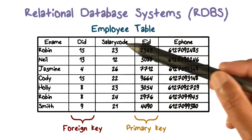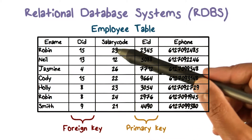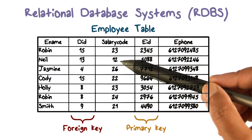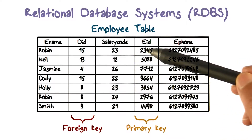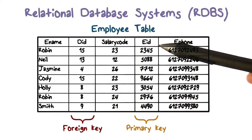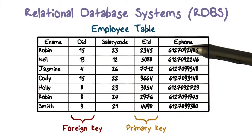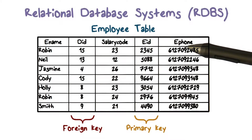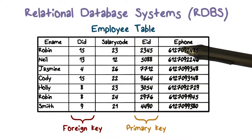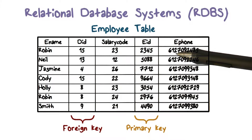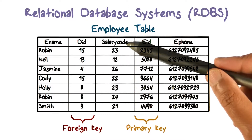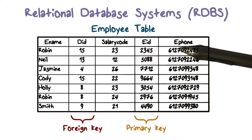We have the salary — we don't have the value itself, but we have a code for the salary. We also have the employee's ID, and then their phone number. So the information about a given employee consists of their name, the department, the salary code, their ID, and their phone number so you can reach them.